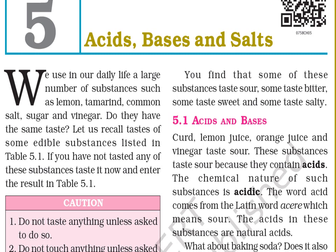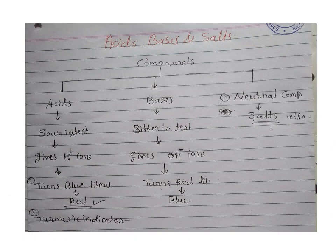We know that we use various substances present around us in our daily life. A large number of substances are there, and most of those substances are in compound form. Some are in element form also, but most are in compound form. What is meant by compound? It is a mixture of two or more elements combined together to form one substance. Among those compounds, which are acids, which are bases, and which are neutral, we will see here.